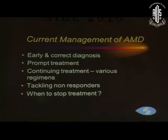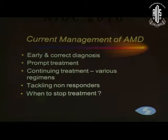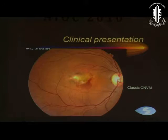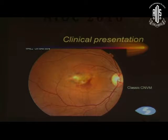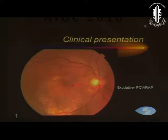Whenever you talk of managing AMD, the first important thing is an early and correct diagnosis, then prompt treatment, continuing treatment - we will be seeing various regimens - tackling non-responders, and when to stop treatment. This is the way these membranes may present: the classical gray, dirty gray membrane, or an occult CNVM with a hemorrhage, or an exudative reaction which we sometimes see in PCV or RAP.